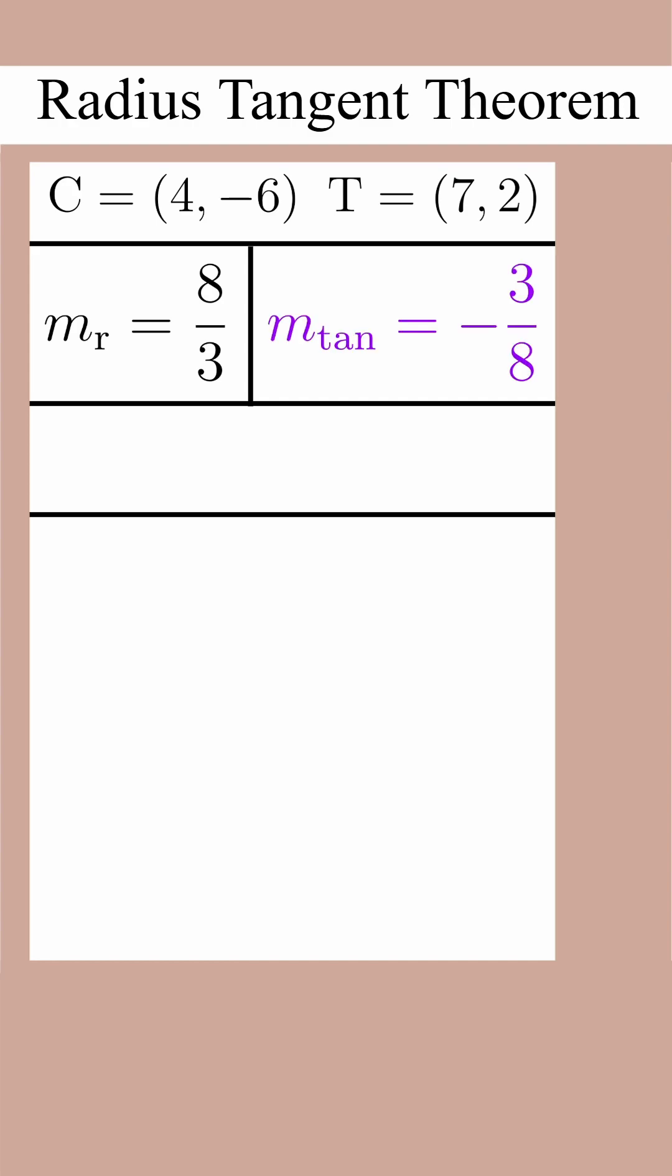We can now find the equation of the tangent line however we want. Why don't we use point-slope form, since we have a point and a slope. The slope of the tangent line is negative 3/8, and the point that goes through it is (7, 2). We get y - 2 = -3/8(x - 7).